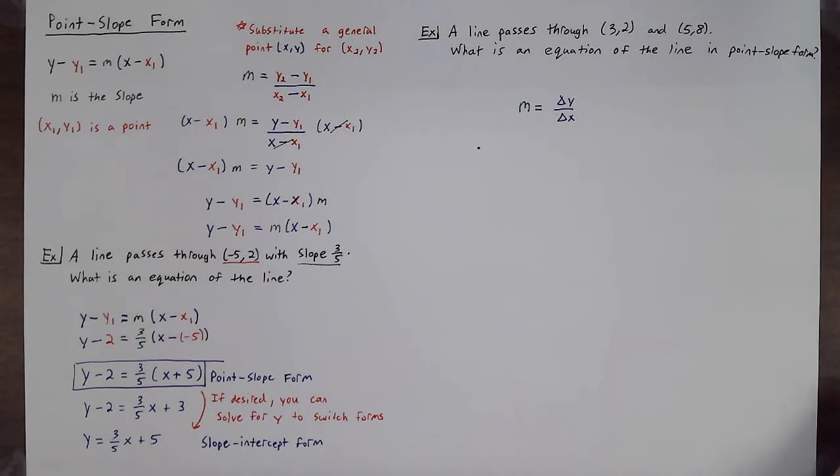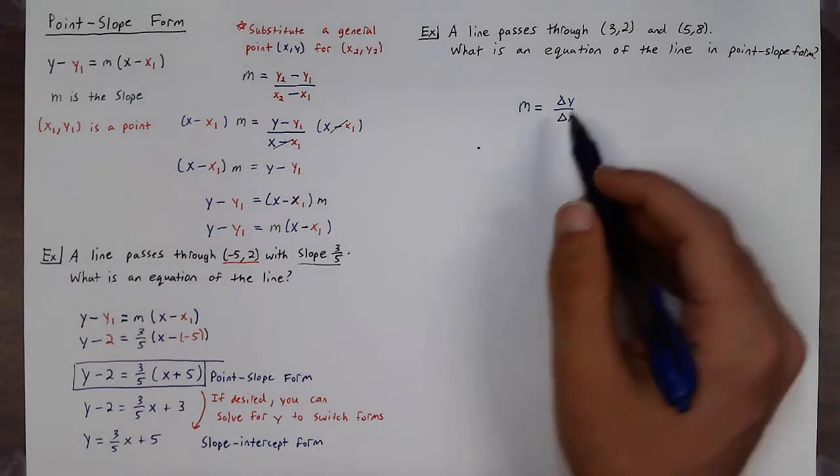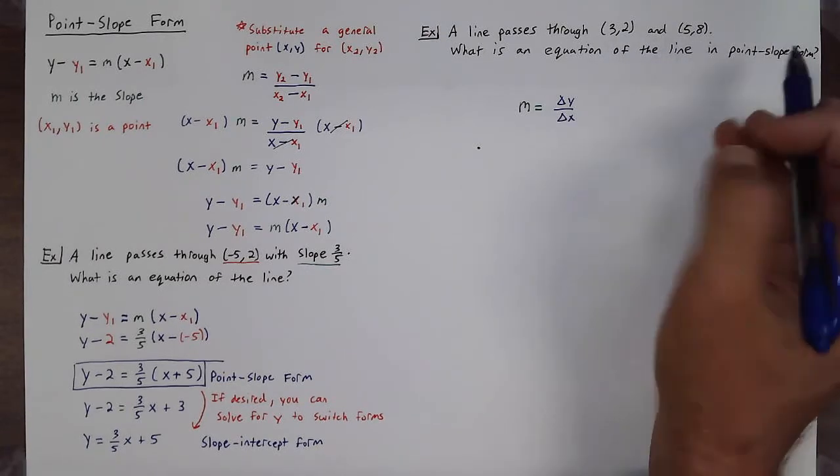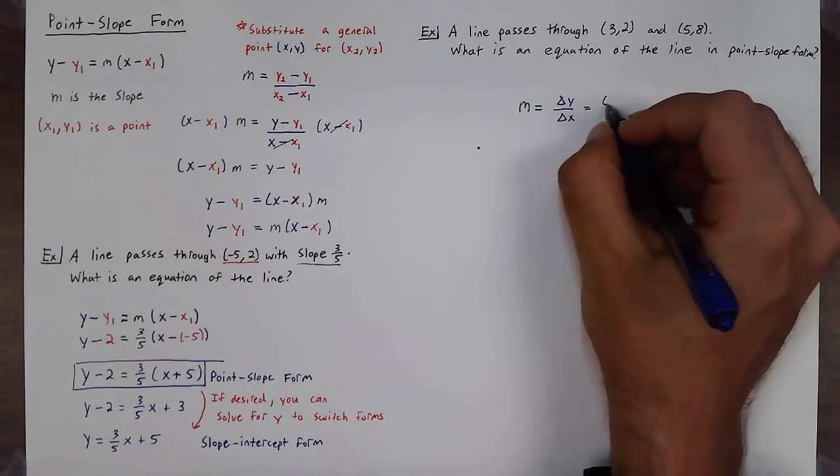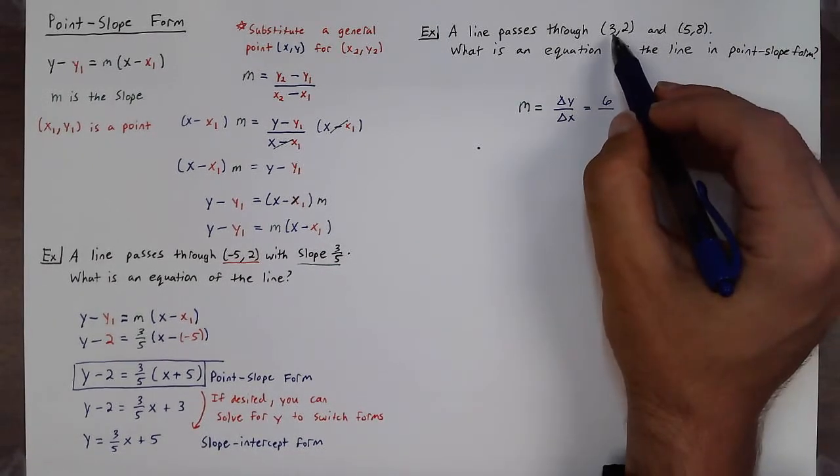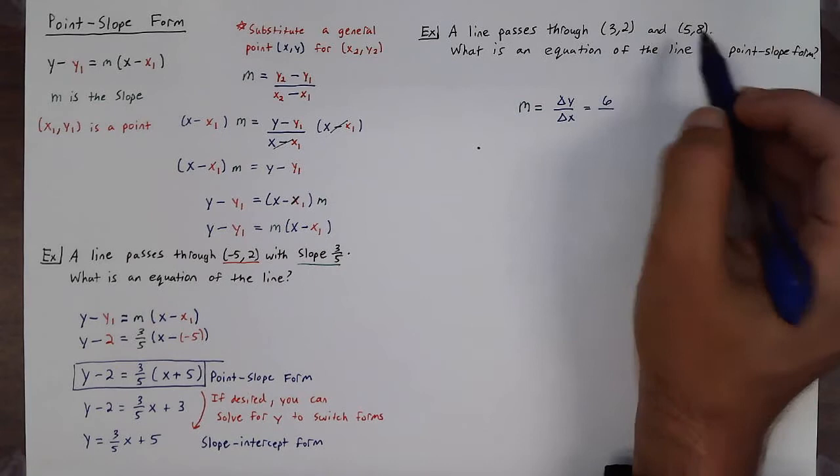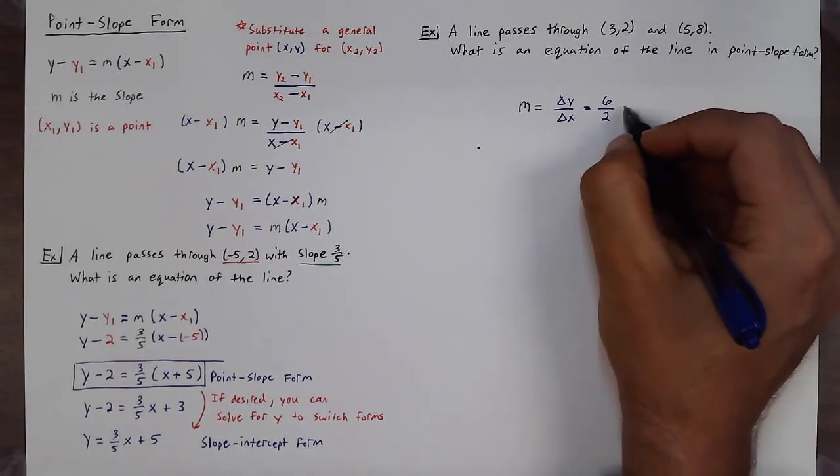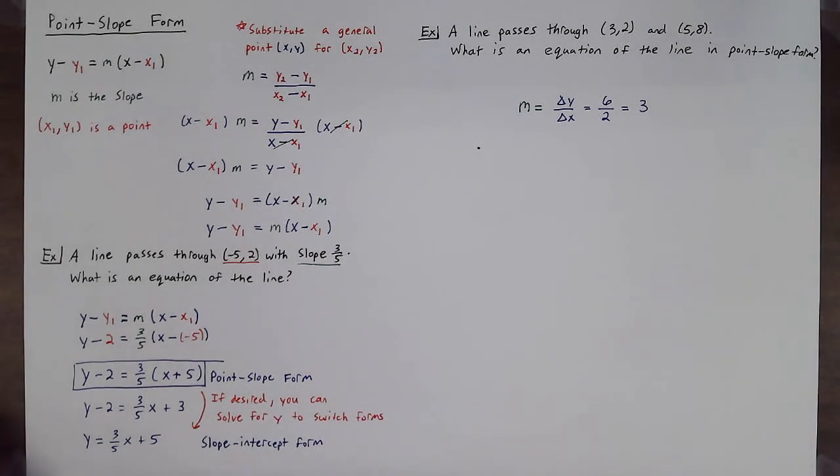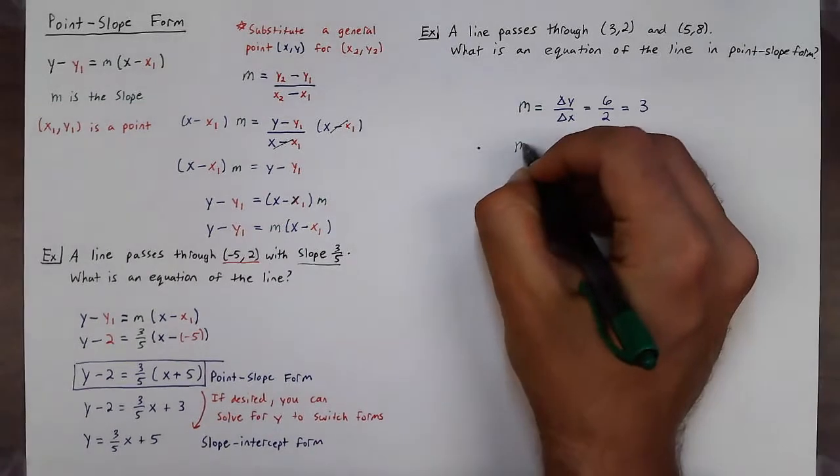Now I don't have a slope yet but I do have two points. So in order to find a slope I just need to use my slope formula. First noting the change in y. So from two to eight that goes up by six, so positive six. And then the change in x which as I go from three to five goes up by two, so positive two. Give me a slope of three. So m is equal to three.